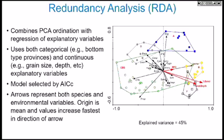Redundancy analysis: if you take a regression of your data against the environmental variables and then do a PCA on those results, you get redundancy analysis. You add a third level onto the diagram representing explanatory variables. For example, percent sand is an explanatory variable increasing in one direction; depth of the RPD — the redox potential discontinuity — increases in another direction. You can also include categorical variables like bottom types defined by sonar, allowing you to embed a regression into the PCA and see more detailed structure about the system.